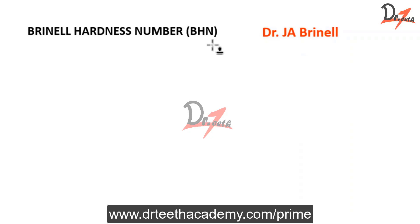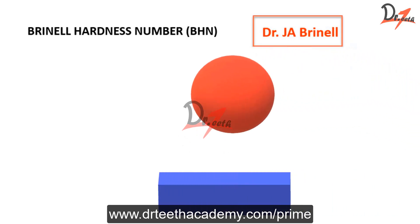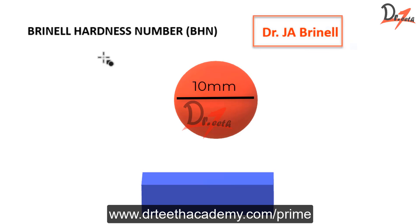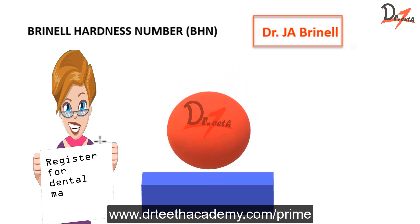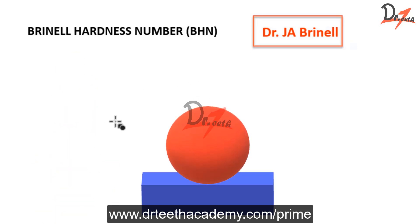The Brinell hardness number was invented by Dr. J.A. Brinell. In this test, we have a steel or carbide ball having a diameter of 10 mm. We give it a load of 3000 kg and indent the surface of the material we have to test. This 3000 kg value can be reduced to 1500 or 500 kg in case we have a soft material. The entire full load is applied for 10 to 30 seconds.